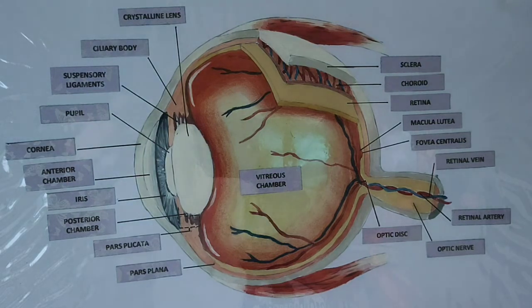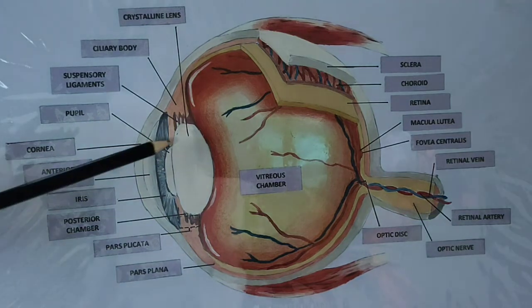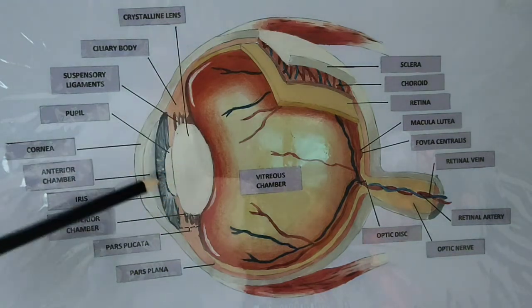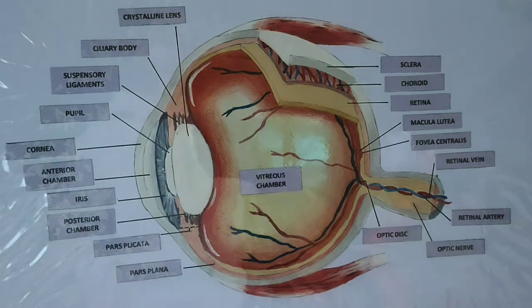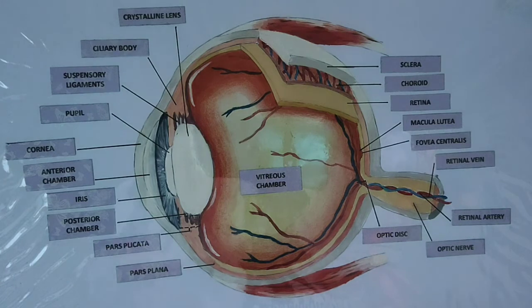Now the pupil is like an aperture that limits the entrance, the amount of light that would go through the eye or inside the eye. So it can dilate, it can constrict. After that it goes to another area we call the posterior chamber.